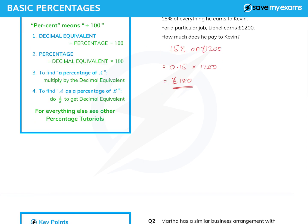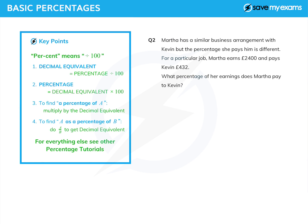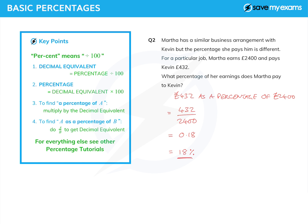For question two, Martha has a similar business arrangement with Kevin but pays a different percentage. For a particular job Martha earns £2400 and pays Kevin £432. What percentage of her earnings does Martha pay to Kevin? We want to express 432 as a percentage of 2400, so we do A over B: 432 over 2400. Putting that in the calculator gives 0.18 — that's the decimal equivalent. Multiplying by 100 gives 18%, and 0.18 and 18% are exactly the same thing.